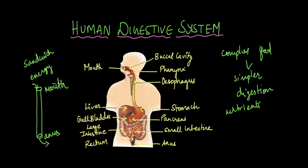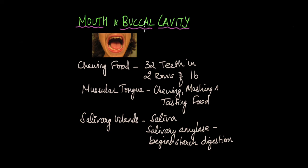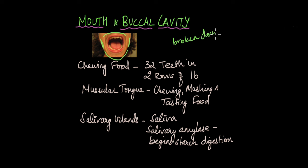So, what happens to the food inside the mouth? Let's take a look at that. The mouth, also called the buccal cavity, is covered by your cheeks on both sides and the palates on the top and bottom. Your mouth has 32 teeth arranged in 2 rows of 16. The function of the teeth is to make sure that the food we eat is broken down or chewed into smaller pieces. Apart from teeth, we also have a tongue which is a muscular structure. The tongue also aids in chewing and mashing the food.